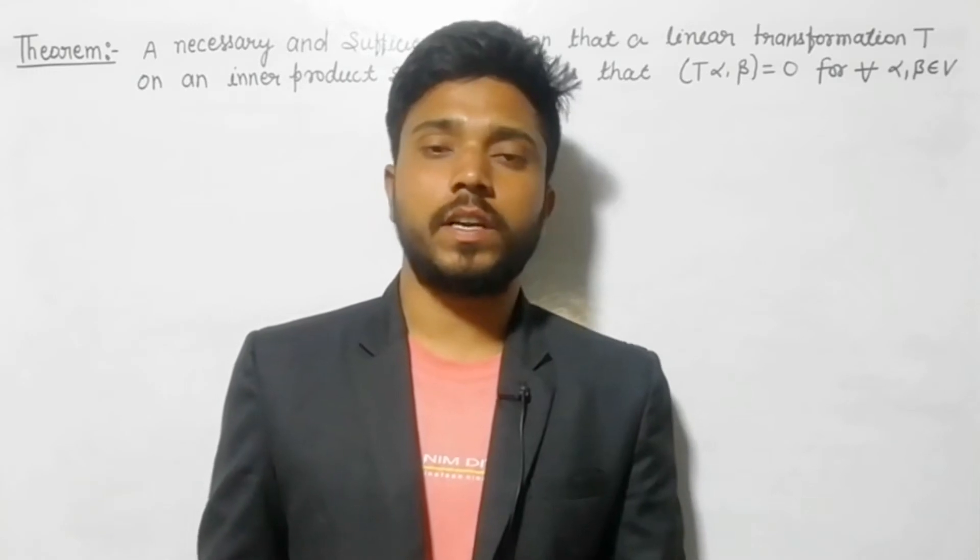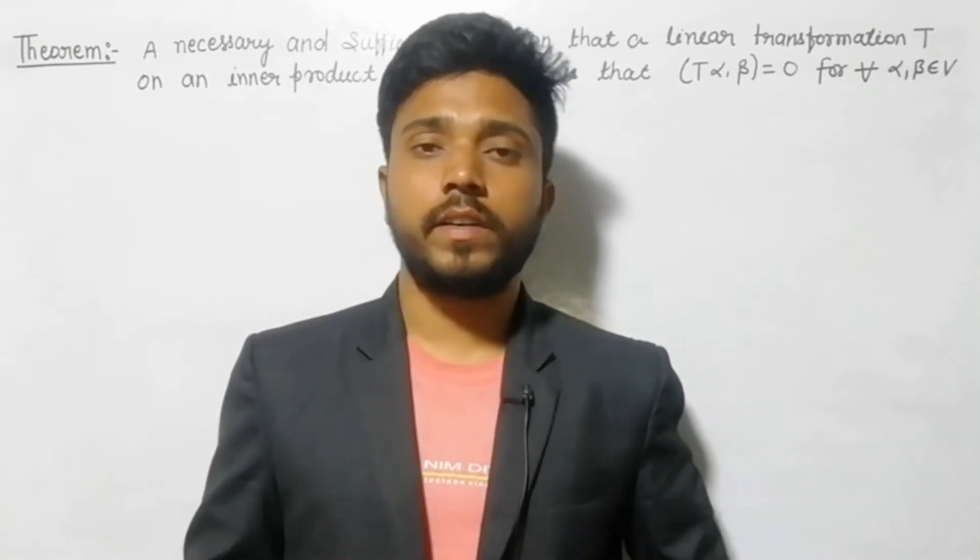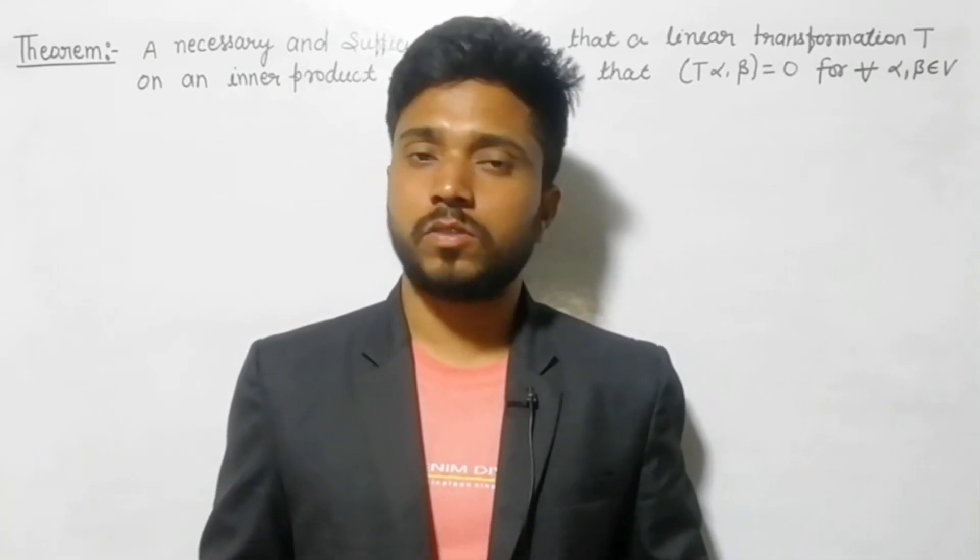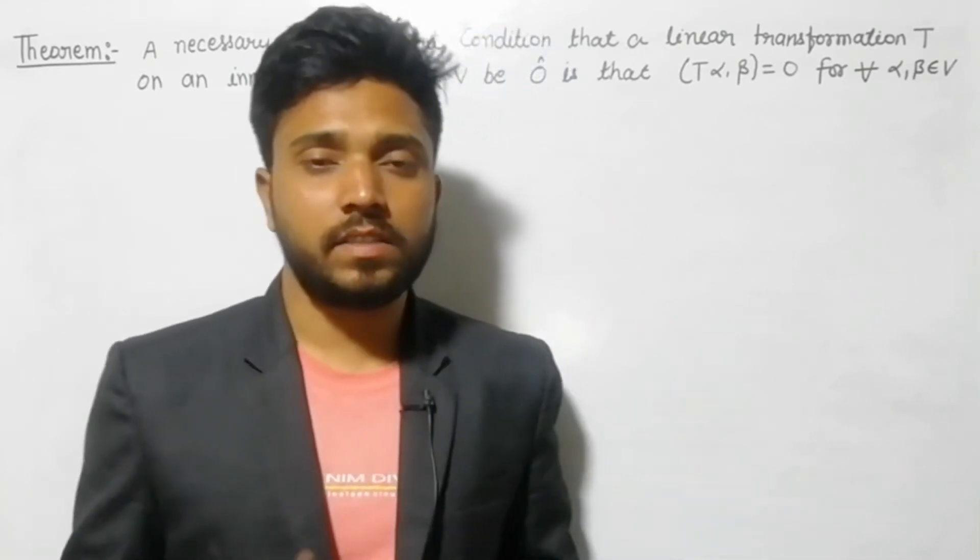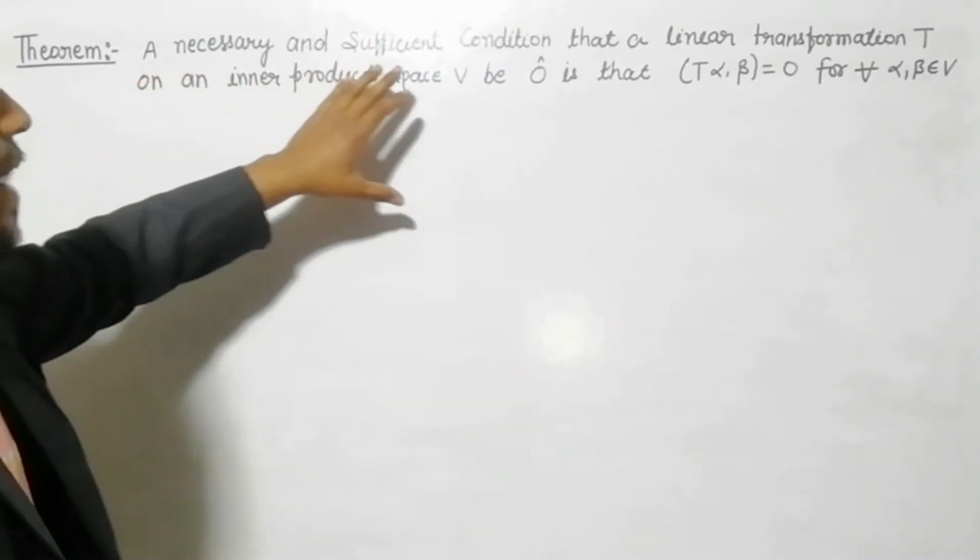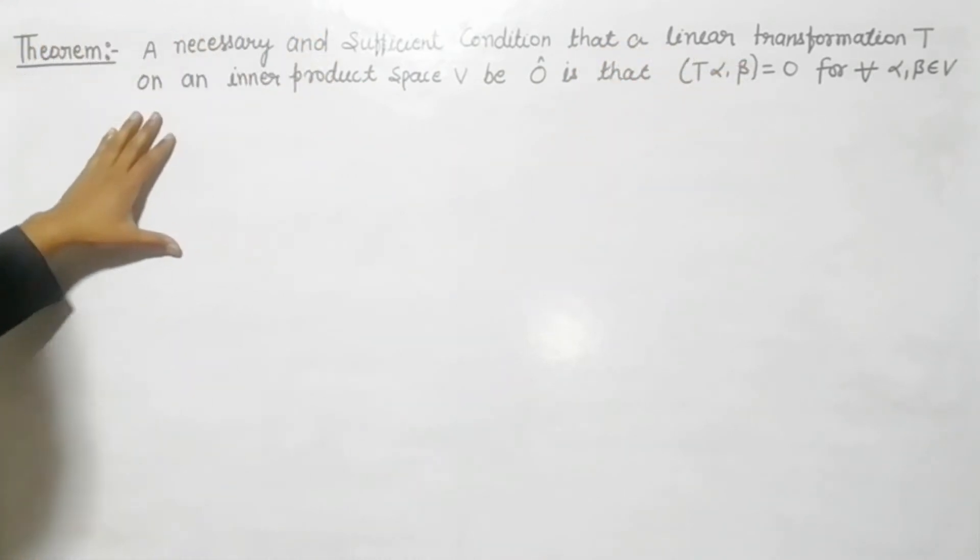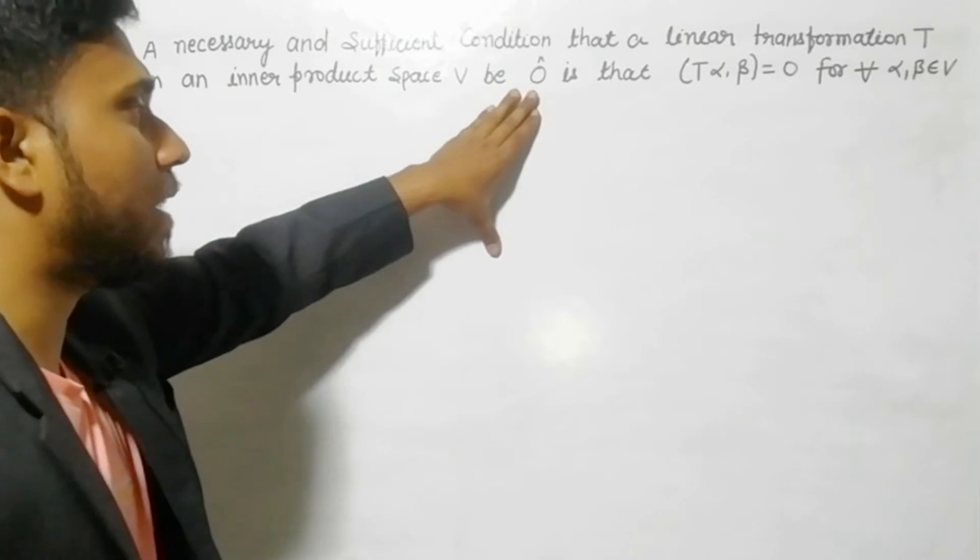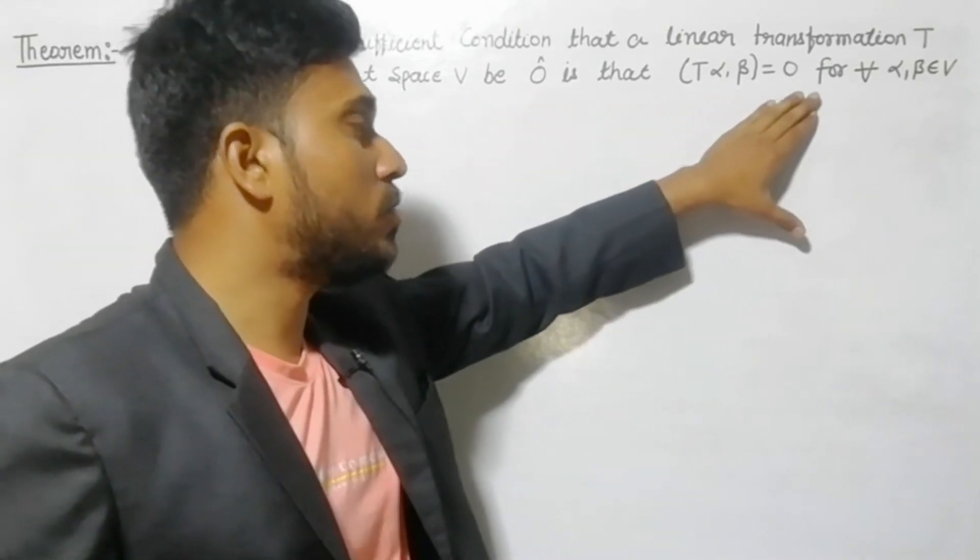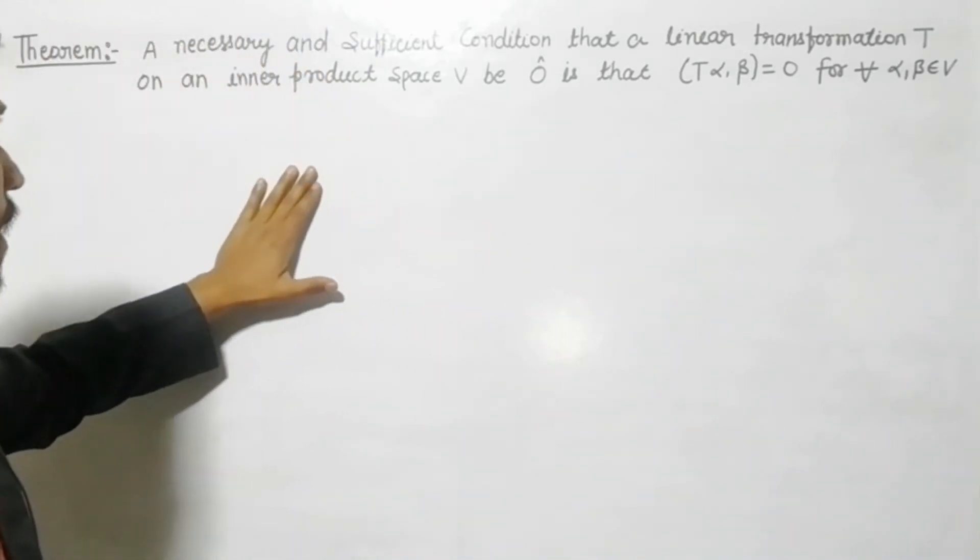Hello everybody, welcome to my channel Tips on Mathematics. In this video lecture we are going to talk about a theorem from the inner product space. Let's see what is the statement of the theorem: A necessary and sufficient condition that a linear transformation T on an inner product space V be zero vector is that transformation inner product (T(α), β) = 0 for every α, β belongs to V.